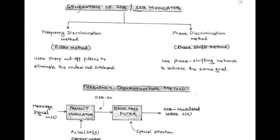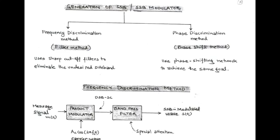Hello friends. Our next topic is the generation of single sideband or SSB modulator. For the generation of SSB, we have two methods. The first method is called the frequency discrimination method or filter method, and the second method is the phase discrimination method or phase shift method.